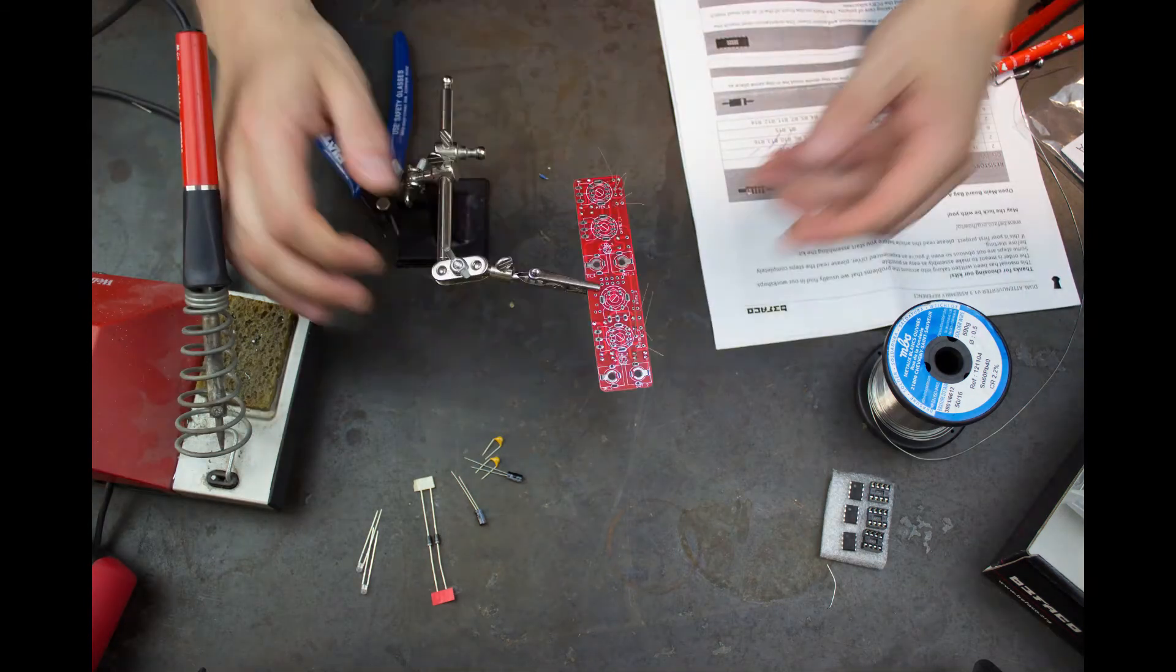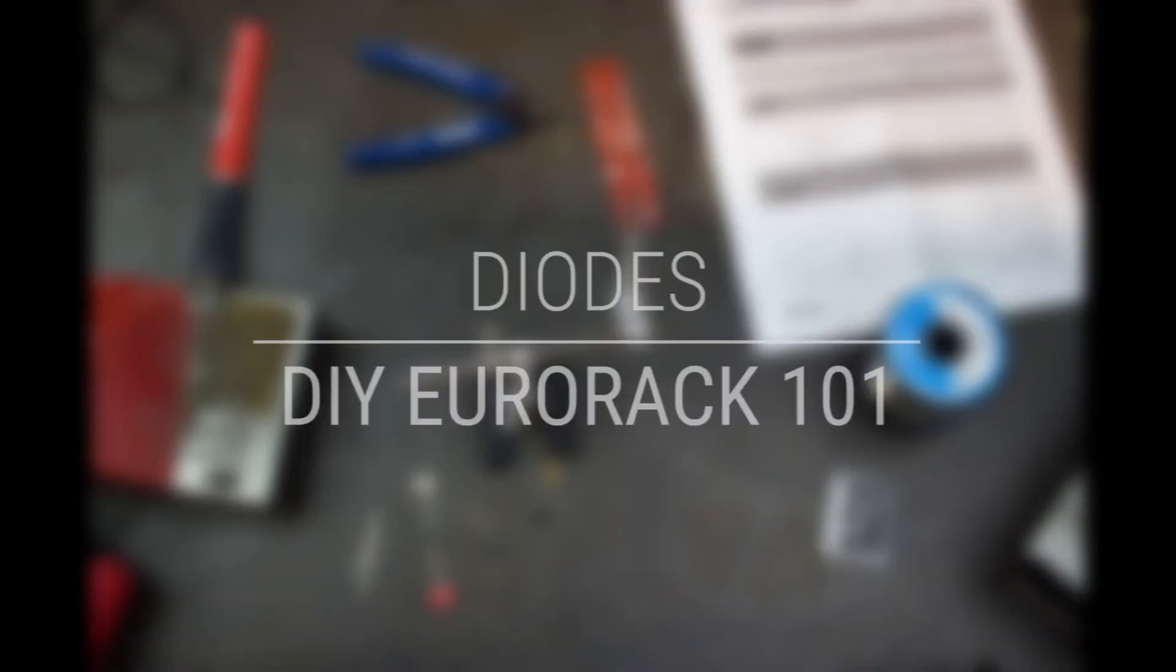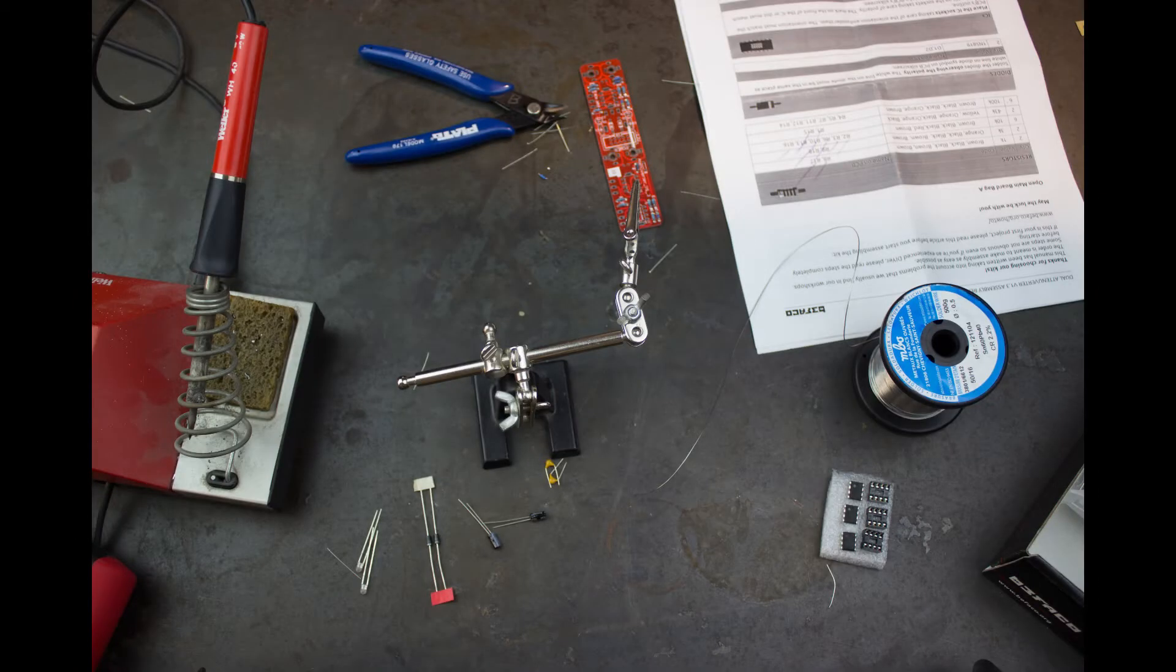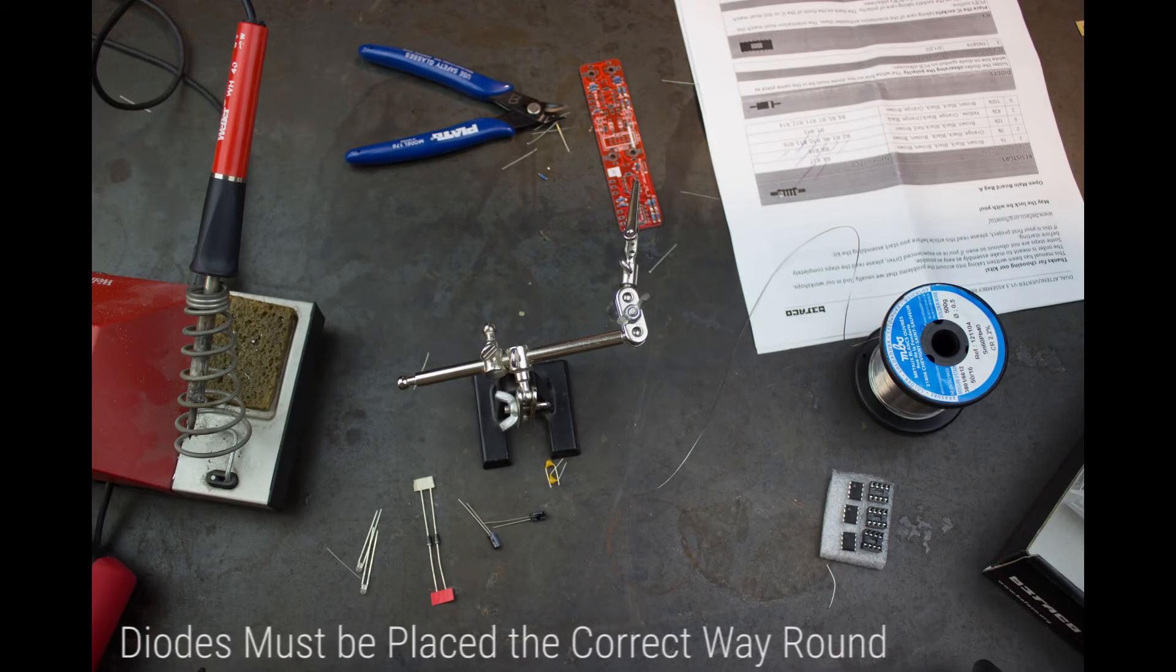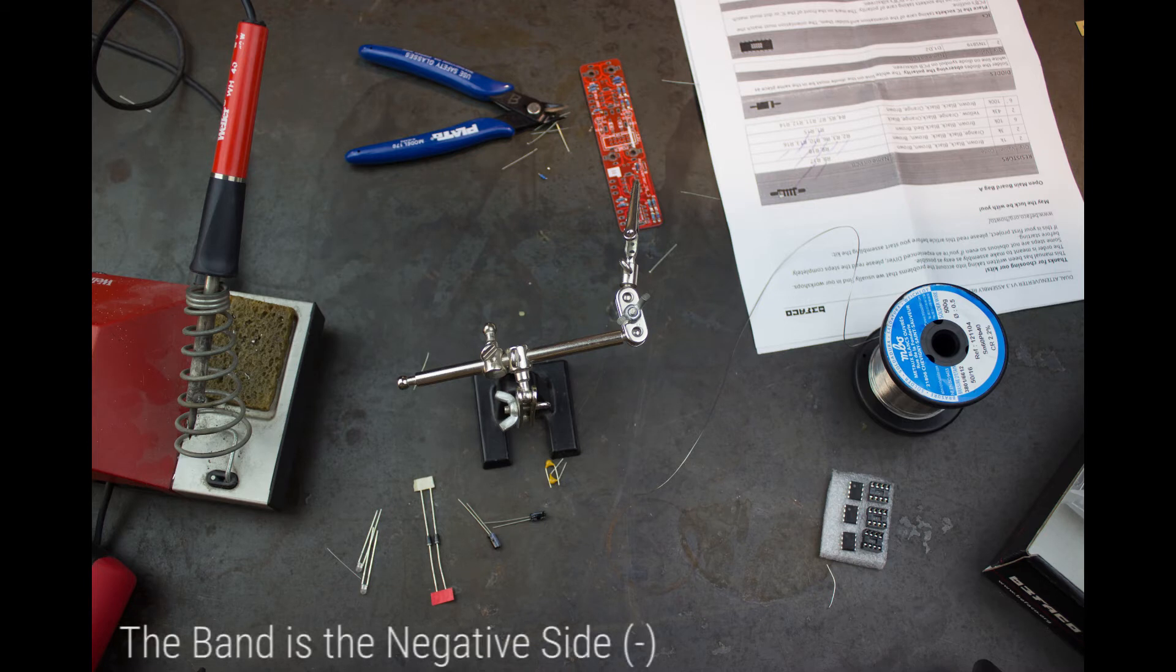With that fixed, I can now finish with the resistors. And that's it, phew. So here we need to be super careful. Diodes are polarised and if they are placed the wrong way round on the PCB, they will not conduct.